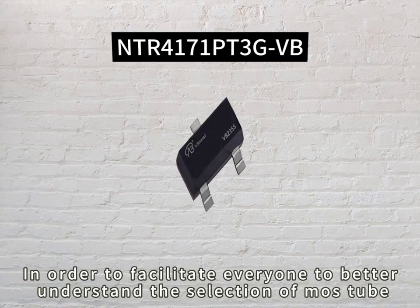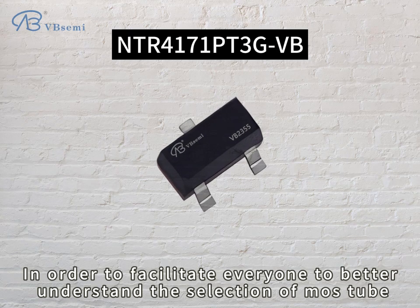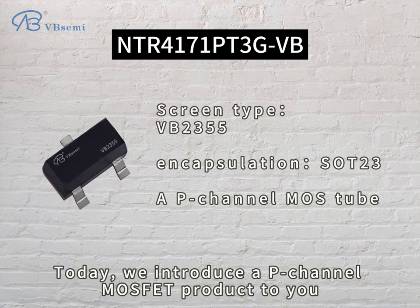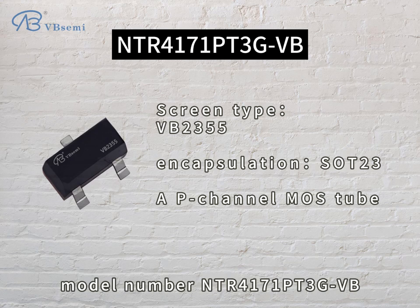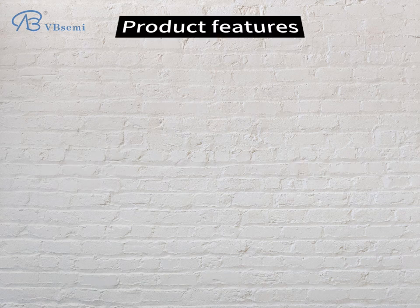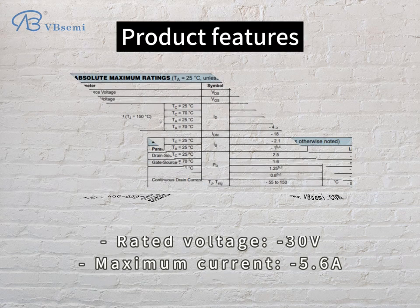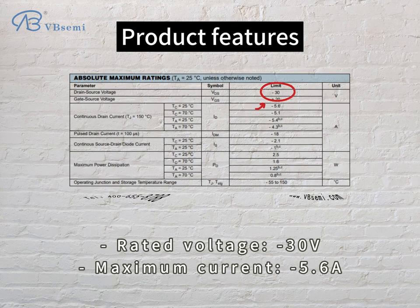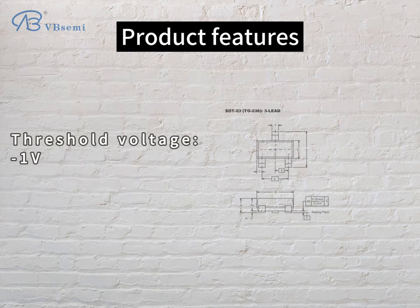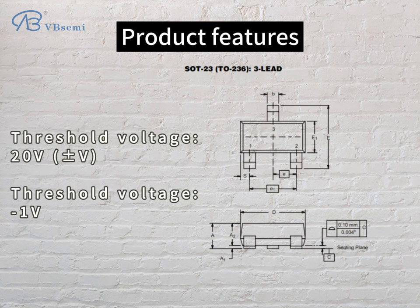In order to facilitate everyone to better understand the selection of MOSFET, today we introduce a P-channel MOSFET product. Model number NTR4171PT3-GVB. Product features: rated voltage -30V, maximum current 5.6A, threshold voltage -20V, V threshold voltage -1V.